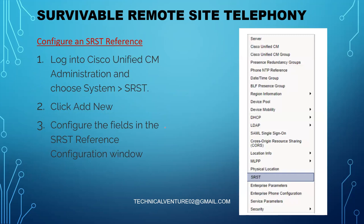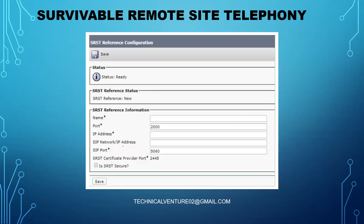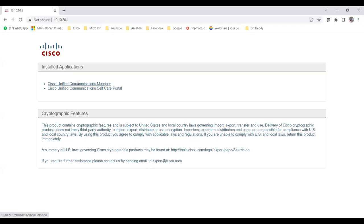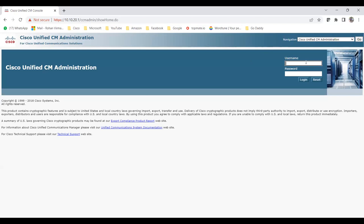Let's start with Step 1 — configuring an SRST reference. I'll first show you with the slides and then simultaneously on Call Manager. You need to log in, choose System > SRST, click Add New, and configure the fields in the SRST reference configuration window. Under System you'll find the SRST tab where you create a new SRST reference.